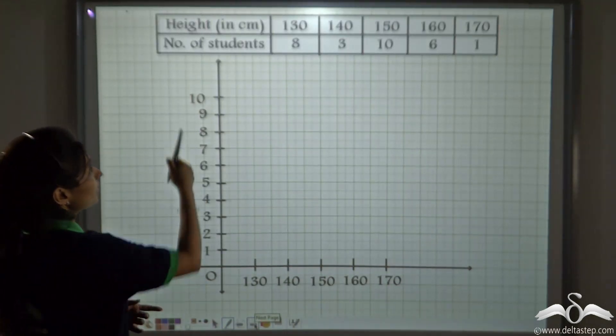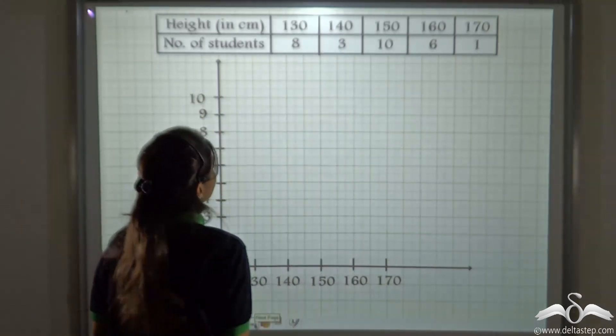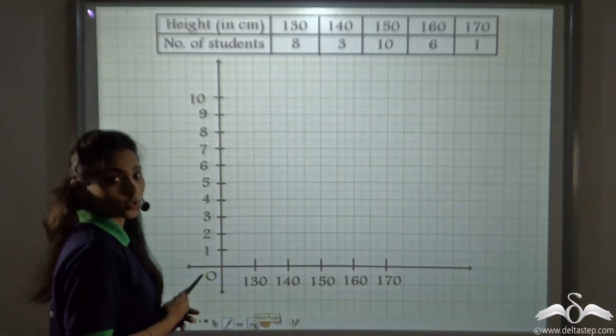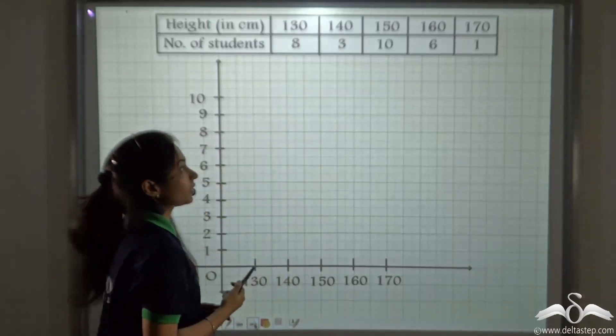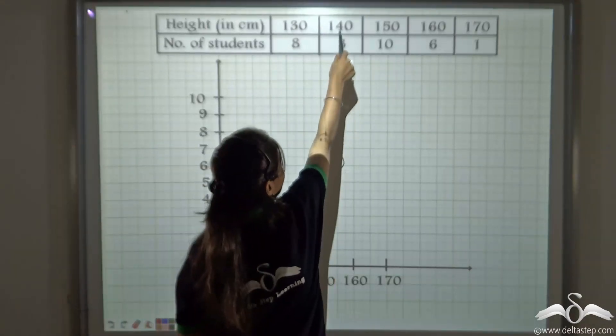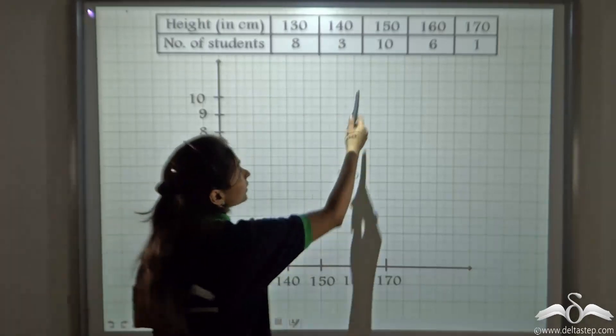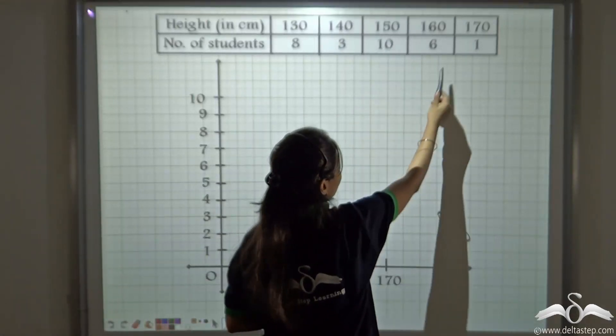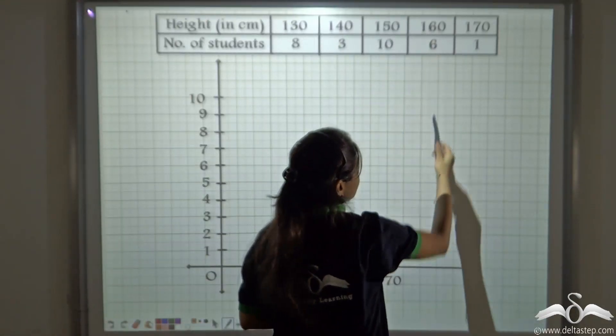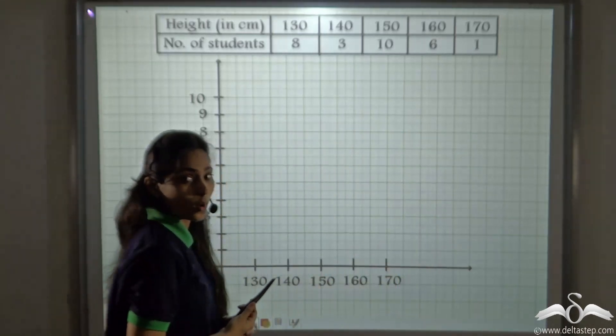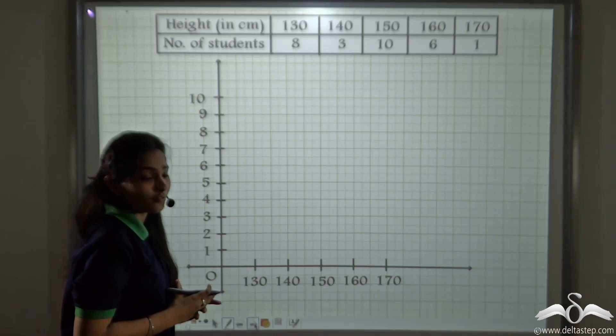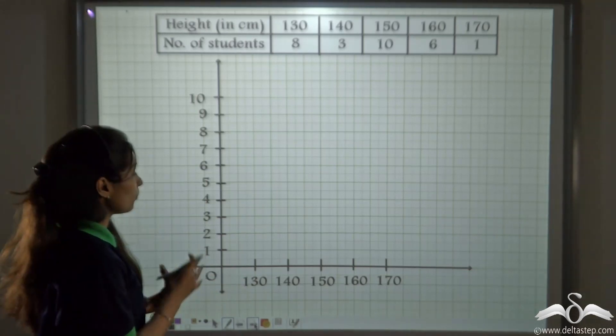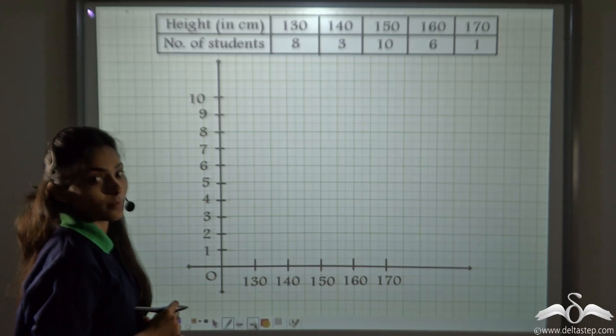Let's see this problem. Here height of students is given in centimetre and number of students is given. Like 8 students are having the height 130 centimetre, 3 students are having height as 140 centimetre, 10 students having height as 150, 6 students having as 160 and 1 student having as 170. Well, I know you can plot this data very easily on the graph. Now my question to you is, where would you put the kink in this sum?